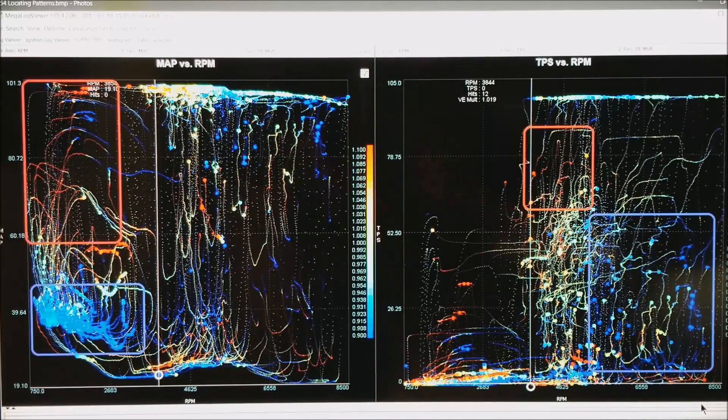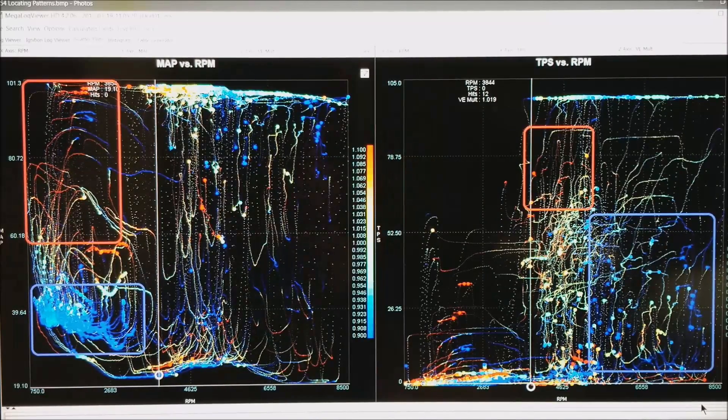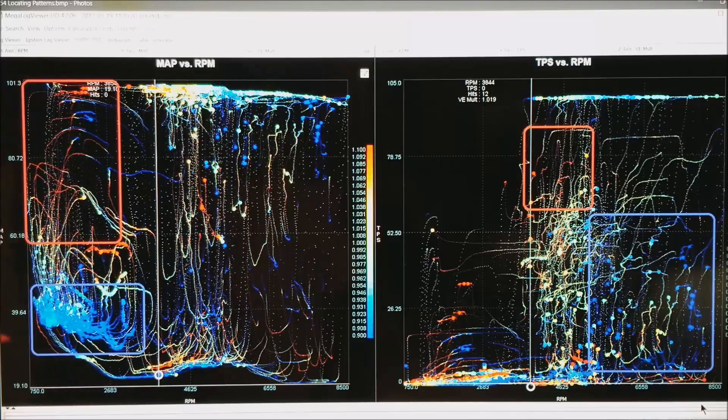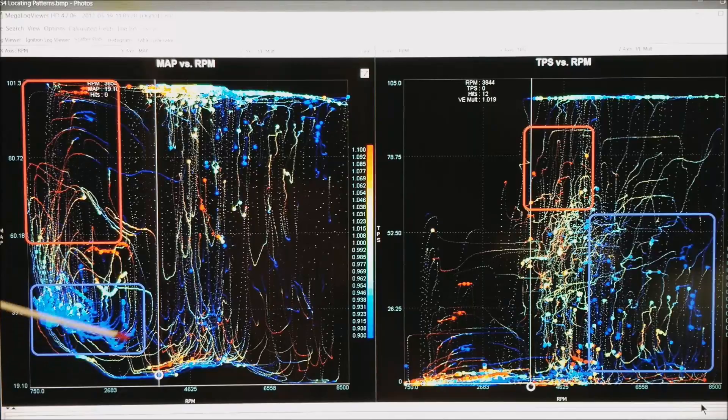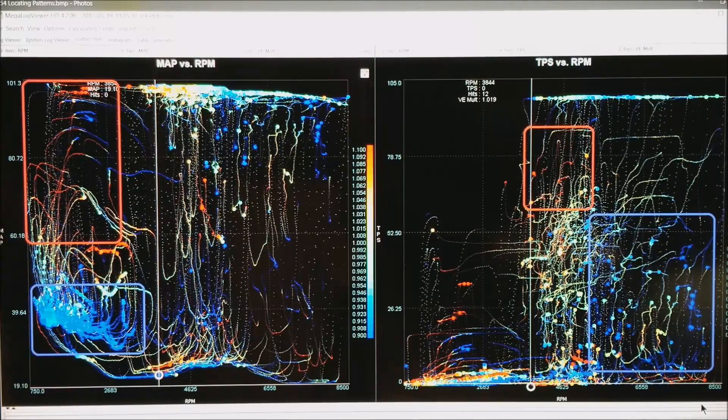What I am going to do is highlight the areas that are blue. Meaning, it looks like we need to multiply the VEs by about a 0.9 to get a little closer to our targets. And the red is the lean areas.